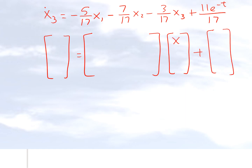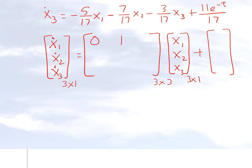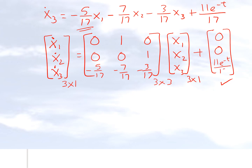The left-hand side contains x1-dot, x2-dot, x3-dot. The 3×3 matrix is populated as: first row [0, 1, 0], second row [0, 0, 1], third row [−5/17, −7/17, −3/17]. The forcing terms go in a separate 3×1 vector: no forcing in the first two equations, but the third has 11e^(−t)/17. That is the state variable form.